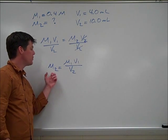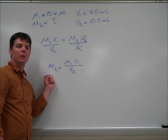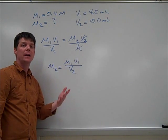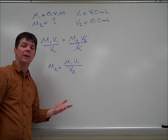Now that we've solved our equation for our unknown variable M2, let's go ahead and plug in our known values and find the new concentration of this iron chloride solution.